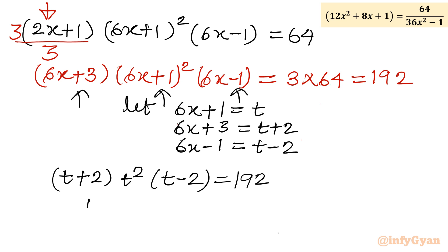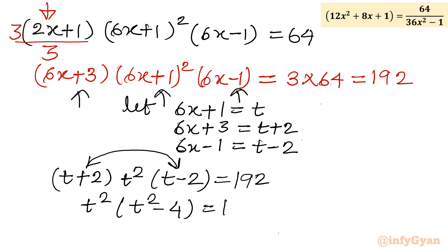I apply the identity (a + b)(a − b) = a² − b² to (T + 2)(T − 2) = T² − 4. So the equation becomes T² · (T² − 4) = 192, which expands to T⁴ − 4T² − 192 = 0.